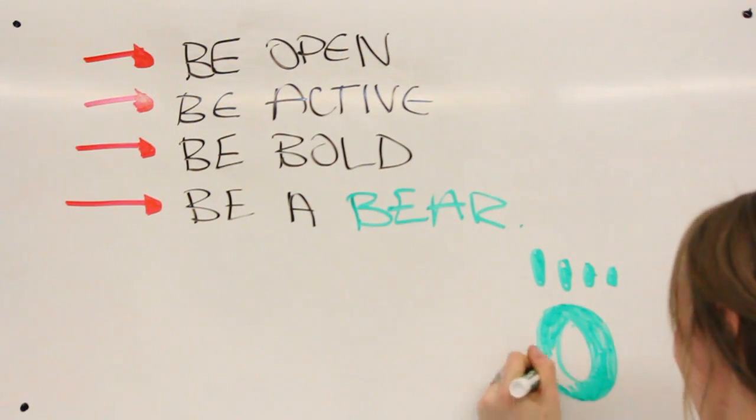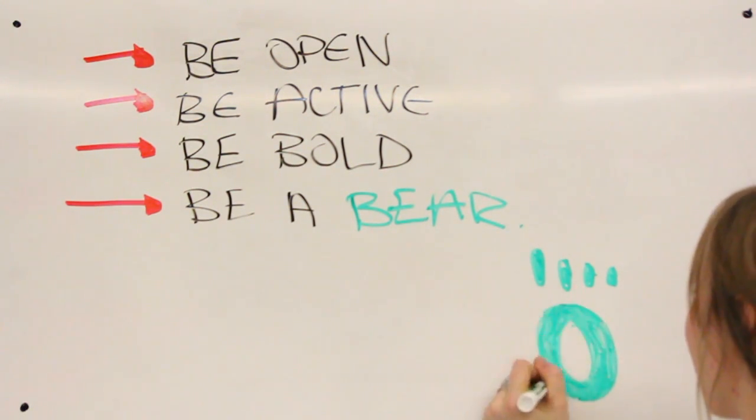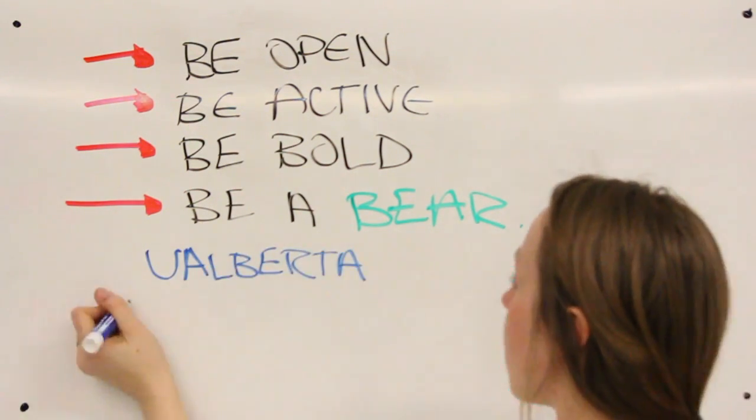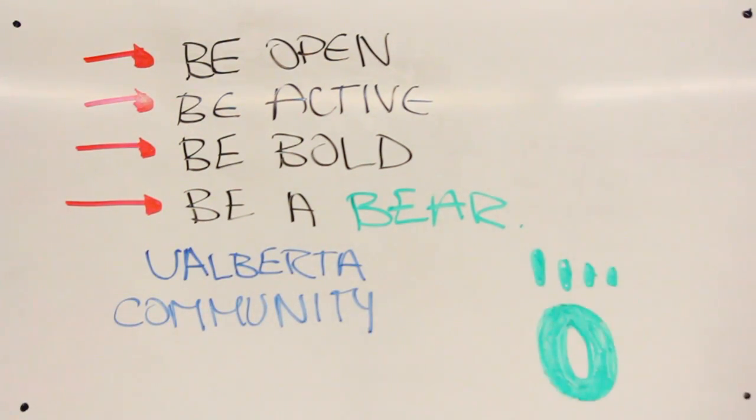Be you. Get comfortable and know that orientation is a safe environment where you can embrace your best quirks and most outstanding qualities. Be bold: get to know someone you haven't met before, and we dare you to find an orientation volunteer who won't want to meet someone new. Be a bear: be active members of our UAlberta community. You're here, aren't you? Let's go ahead and check that box off. It's now time to get you oriented to orientation.